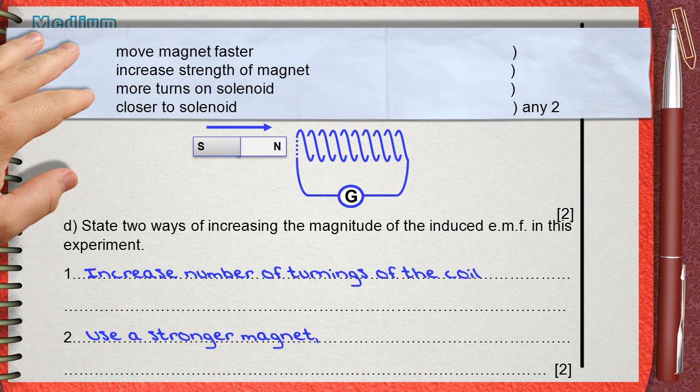Any two of the following will give the two marks. Move magnet faster, increase strength of the magnet, more turns of the solenoid. We can also say closer to solenoid. Any two of these four will get the two marks.